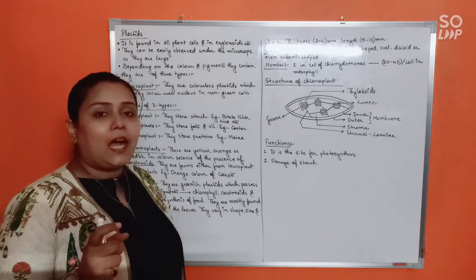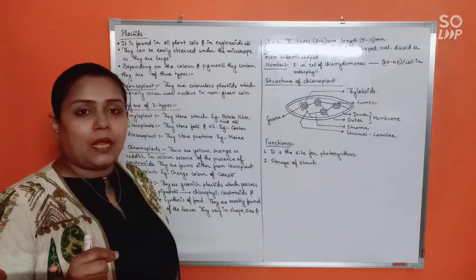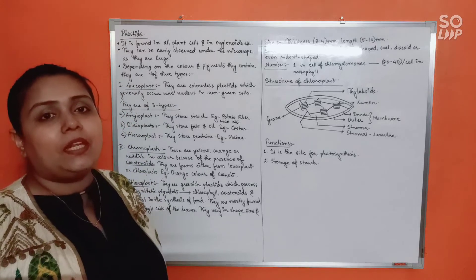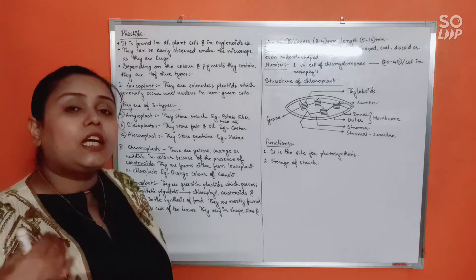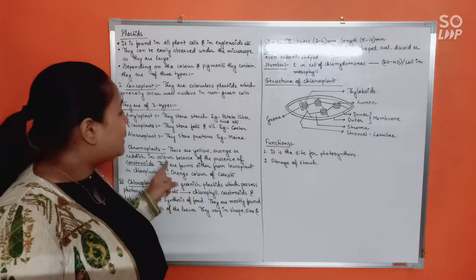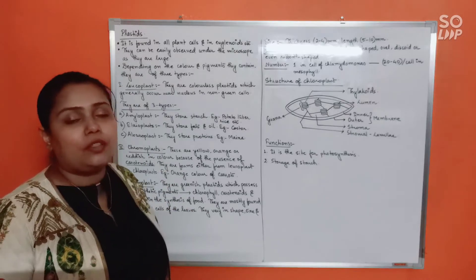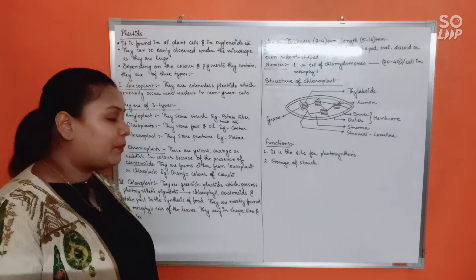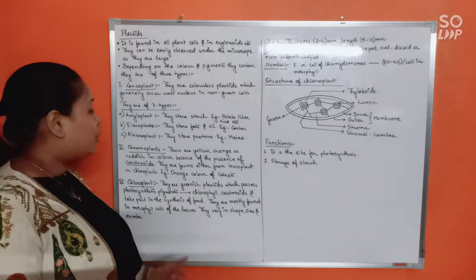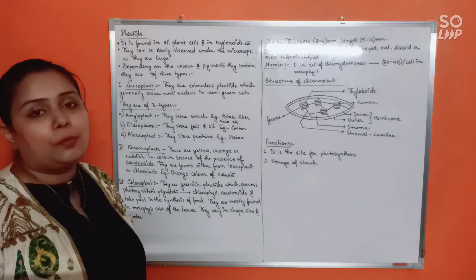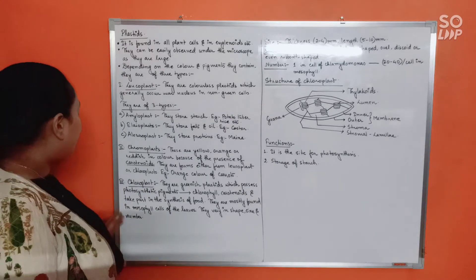Unripe chili or tomato is green because it contains chloroplasts. As the ripening process begins, the chloroplasts start converting into chromoplasts, and at that point they turn orange and then reddish. Also, the orange color of carrots is due to the presence of chromoplasts.